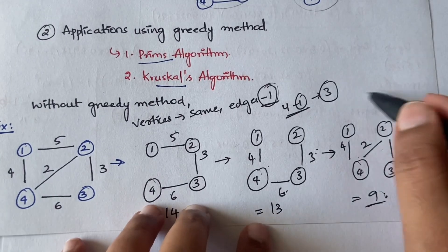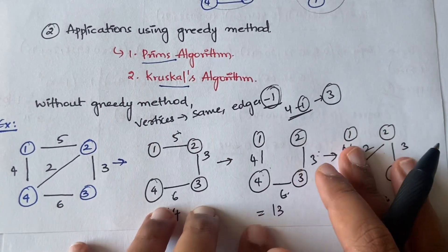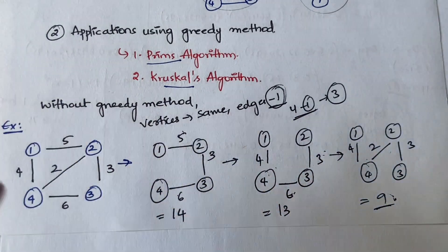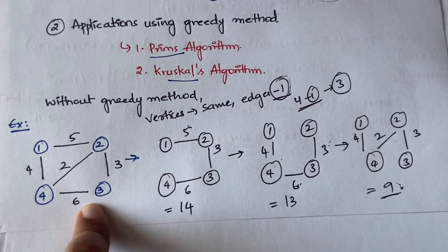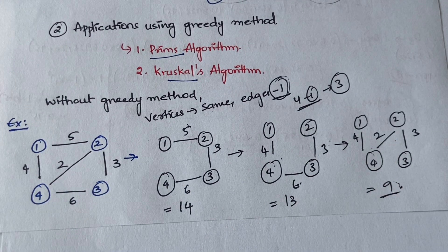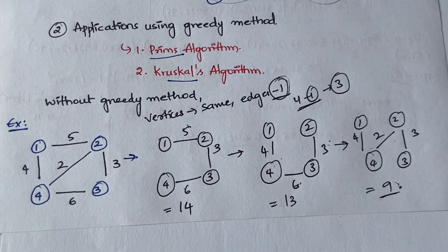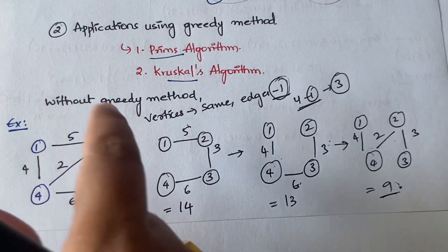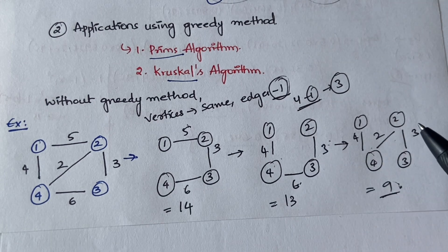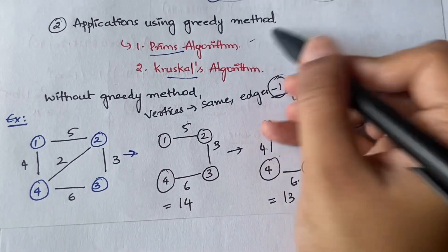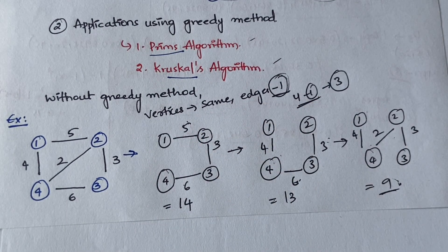For this small graph with four vertices you were able to list spanning trees, though there are actually six or seven possible spanning trees. For a graph with seven, eight, or ten vertices, listing all possible spanning trees and finding the minimum cost is a very lengthy process. That is why we have Prim's algorithm and Kruskal's algorithm.